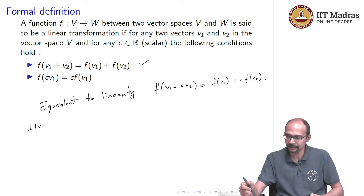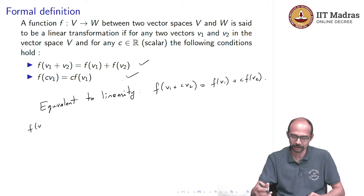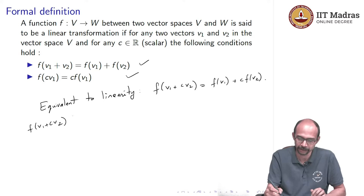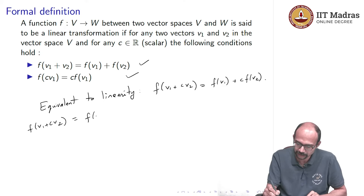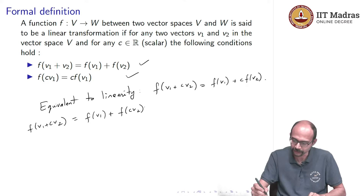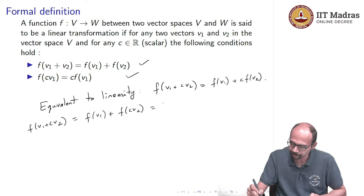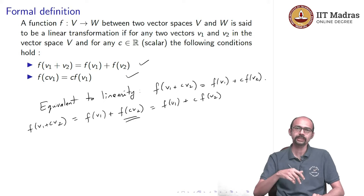Conversely, if we know both conditions hold and we want to show linearity for f(v1 + c·v2), we treat c·v2 as a vector and use the first condition to write f(v1 + c·v2) = f(v1) + f(c·v2). Then we use the second condition to write f(c·v2) = c·f(v2). That gives us linearity. So the two formulations are equivalent.